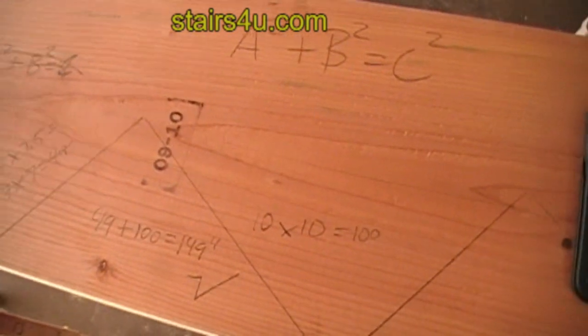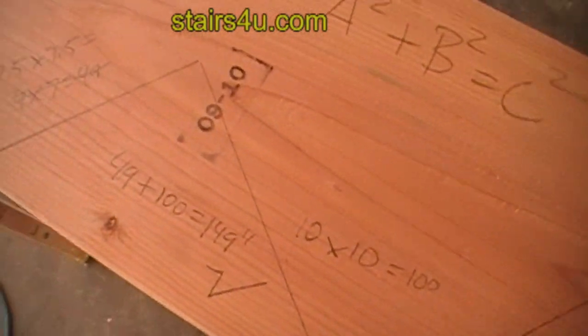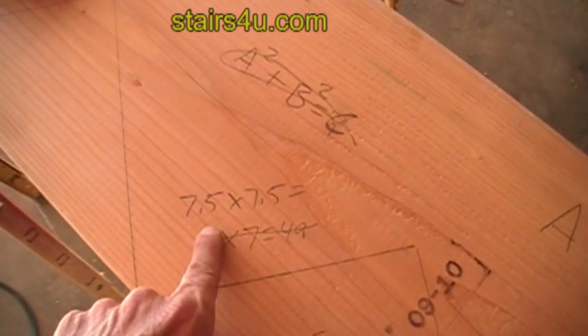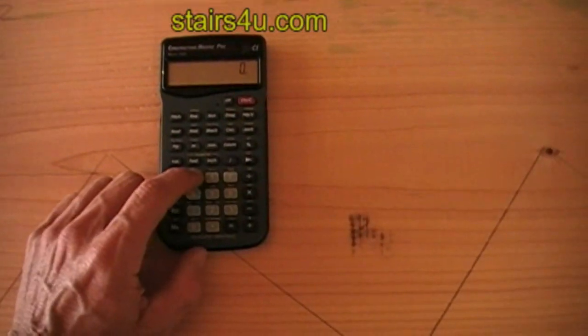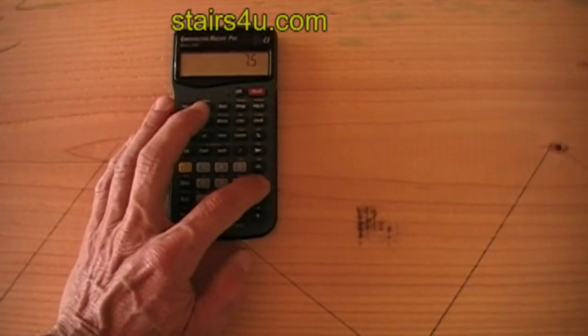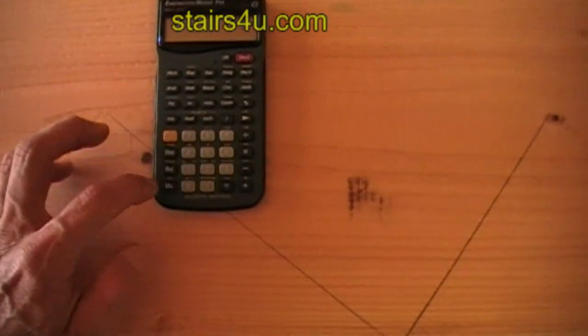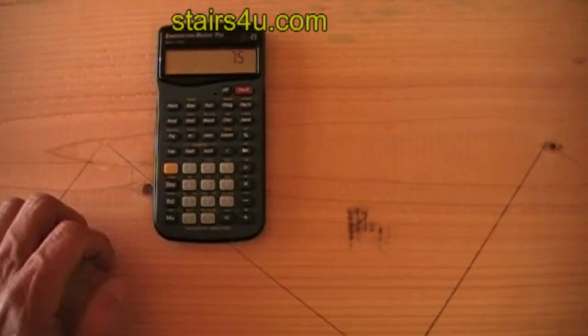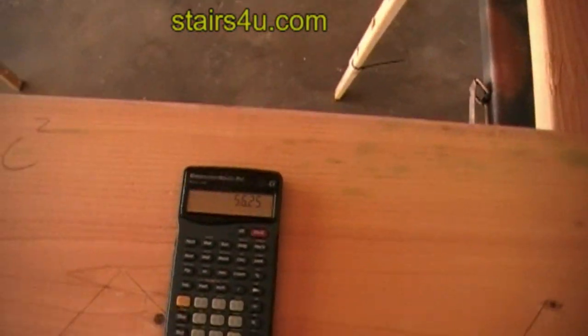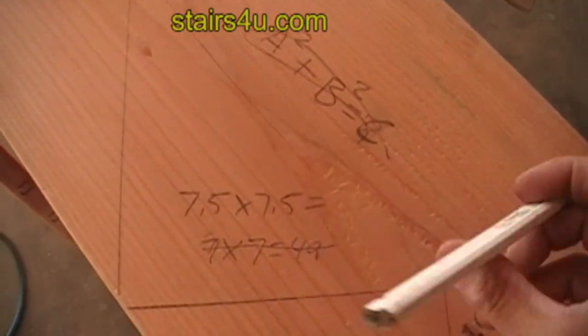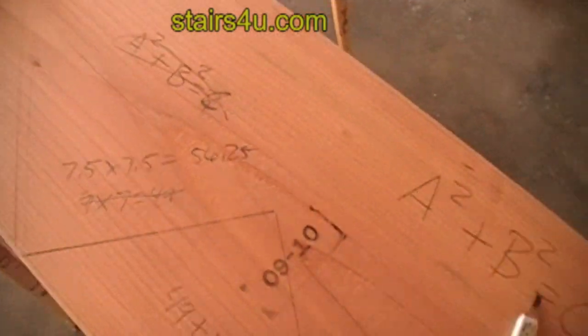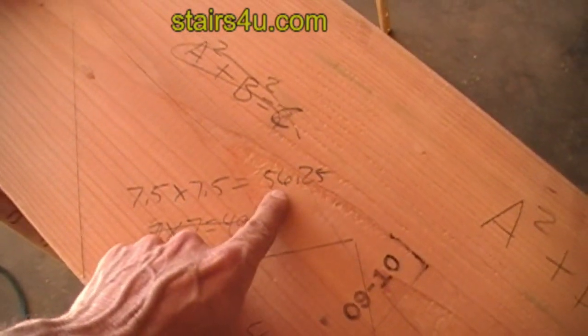Now, how are we going to get 7.5 squared? We broke it down to a decimal. We're going to take 7.5 and multiply it by 7.5 and see what we come up with: 56 and a quarter, or 56.25. I'm going to write that down here. So now we have the square of the riser.